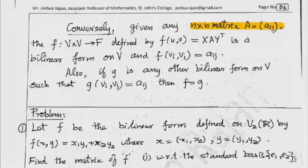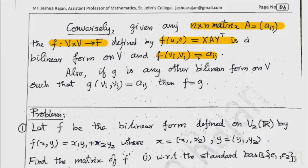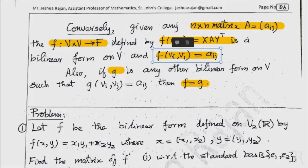Given any matrix A equal to [a_ij], we define the bilinear form accordingly. Conversely, the matrix of a bilinear form has entries alpha_ij equal to f(v_i, v_j). This establishes a one-to-one correspondence between bilinear forms and their matrix representations.